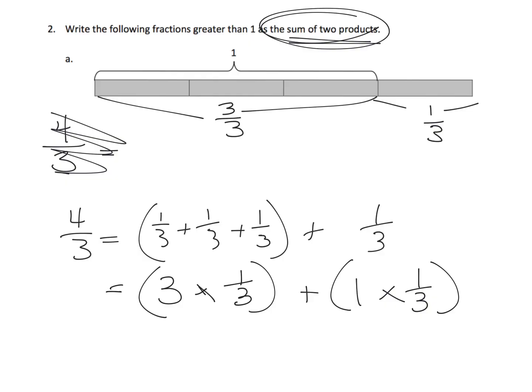Why are we doing that? We're doing that because down the road, we want students to be able to see this as one whole and this is one-third, so we want students to see that eventually this is one and one-third — guiding students towards a standard algorithm for turning improper fractions into mixed numbers. It's also nice because this leads students towards the idea of multiplying fractions, which they will do in fifth grade.